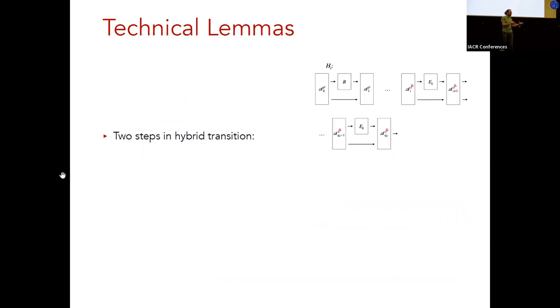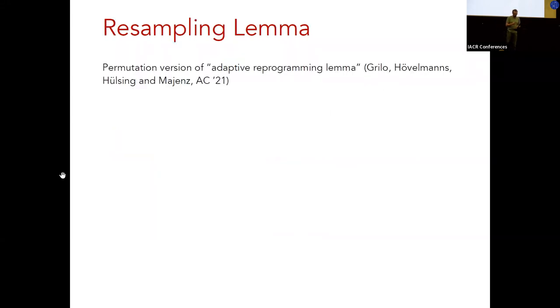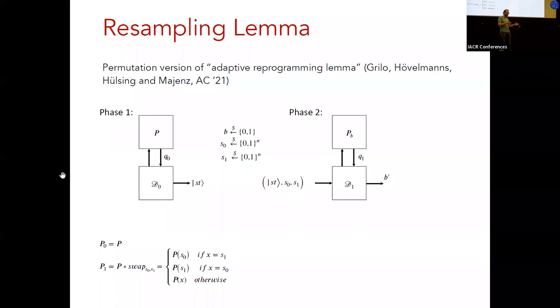So on a technical level, there's two steps in each transition from one hybrid to the next. And the first one is to replace the cipher by a random permutation and to repair this permutation to P tilde at the same time. And the second step is to replace one call to P tilde by a call to P, right? Because we only want to use P tilde after the first call to EK. And these two steps translate into two technical lemmas. The first one is one we call a resampling lemma for random permutations. And the second one is a reprogramming lemma in terms of the expected number of quantum queries. Let me quickly tell you what these are. So the resampling lemma is a permutation version of what we used to call the adaptive reprogramming lemma in a work by Alex Brillo, Katrin Hövelmanns, Andreas Hülsing, and myself.